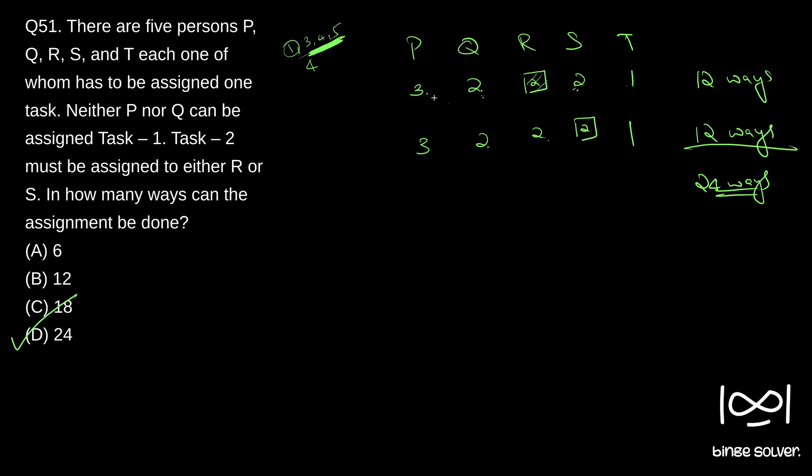If it was not clear why we took 3 into 2 into 2, I suggest you to check what is the fundamental principle of multiplication in counting. You can learn about that in the video permutation and combination that I have done in this channel. You can find that video in the playlist basic concepts of mathematics. Okay, so solution to question 51 is D, 24.